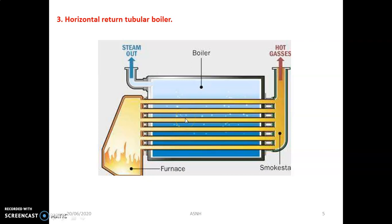Heat transfer takes place mostly by conduction and convection, as well as by radiation. The water gets heated, continuously converts into steam, and the steam exits from the top section into the steam drum. This type of boiler is mostly used in food, textile, and processing and packaging industries where the pressure requirement is in the range of 5 to 7 bar. Construction and maintenance are very straightforward with very few maintenance problems.